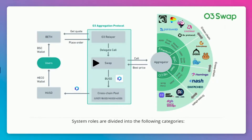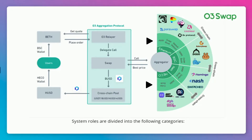Three: swap, the core exchange mechanism of the system, receives users' requests from the relayer and achieves liquidity settlement via smart contracts. Four: the aggregator aggregates liquidity sources across blockchains and determines the best trading rates and routes for users. Five: the cross-chain pool is the cross-chain asset transaction pool built on the Poly Network protocol, enabling free exchange of assets across chains. Six: liquidity providers, including automated market makers from different DEXs and LP market makers who provide liquidity for the cross-chain pool.